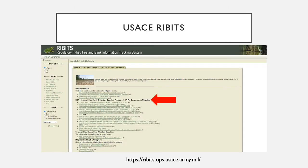To get started, I'd like to provide everybody with the location where these documents can be downloaded. There's a link that will connect to the U.S. Army Corps of Engineers' RIBBETS site, and all these documents can be downloaded online. Any updates to these documents are also found on this website.